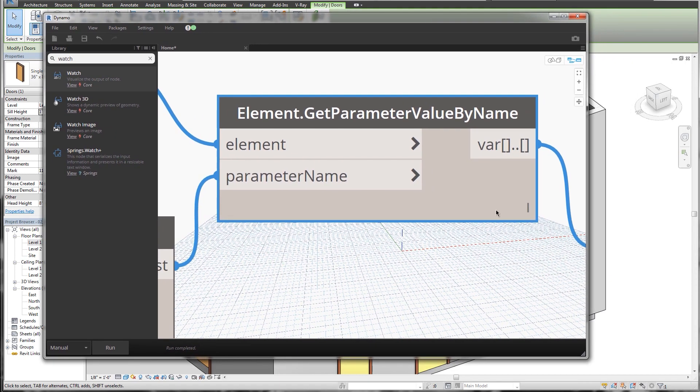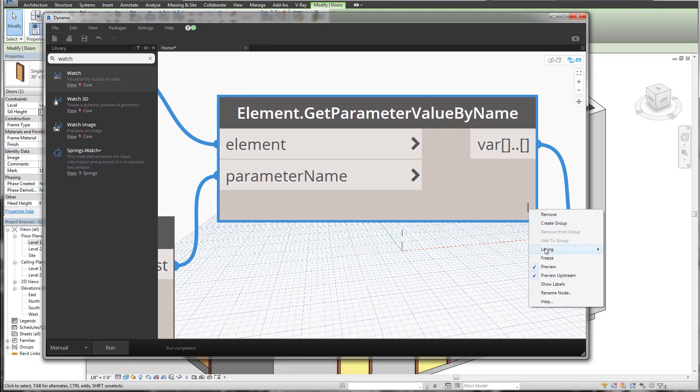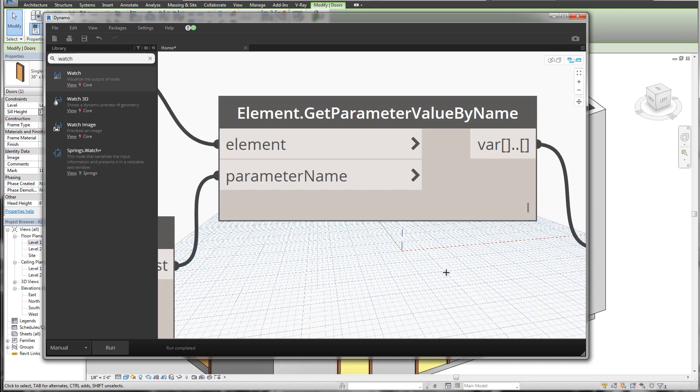So let me move this over so you can see it. I'm going to right click. I'm going to click lacing and you can see we have shortest, longest and cross product. So let me just tell you a little bit about what each one of these does before we change it.